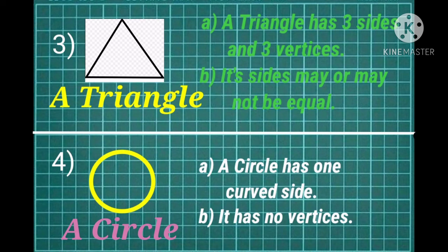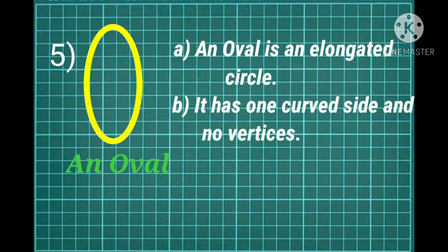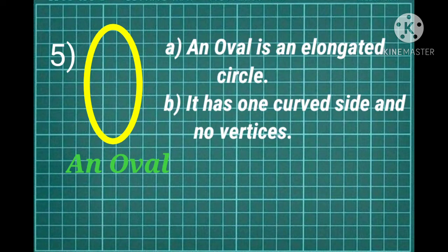Now the fourth one is circle. A circle has 1 curved side. It has no vertices. Now the fifth one is oval. An oval is an elongated circle. It has 1 curved side and no vertices.